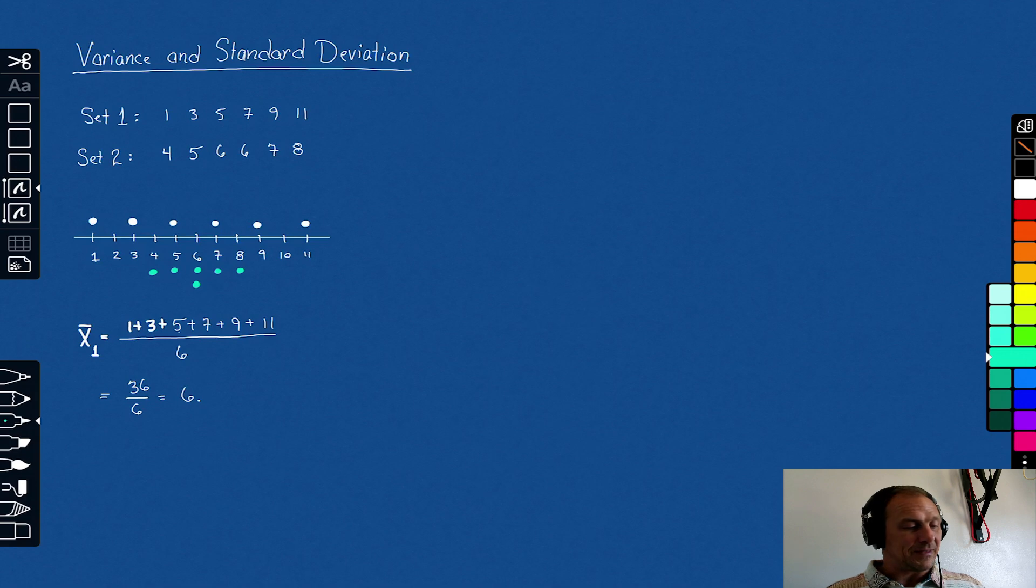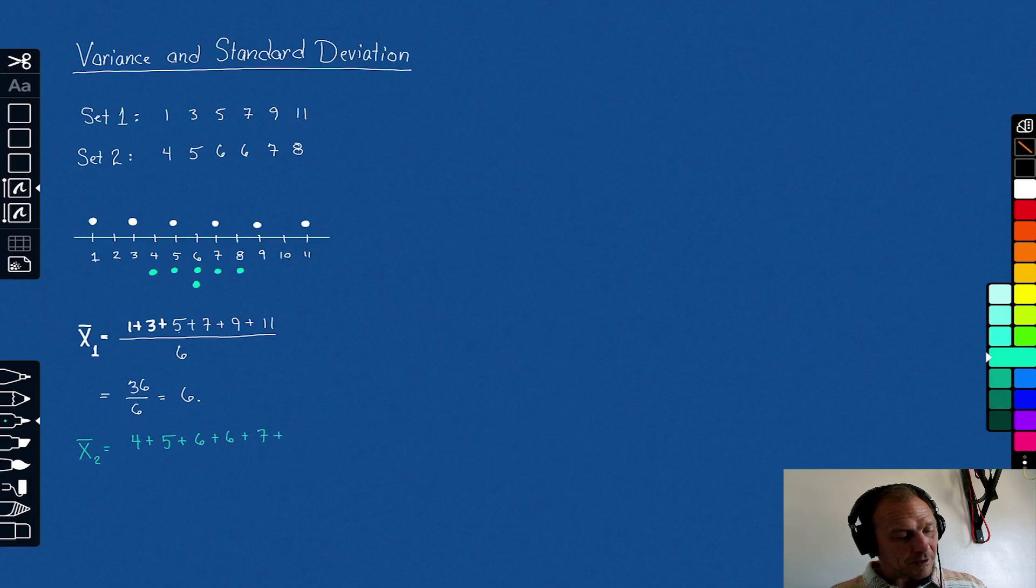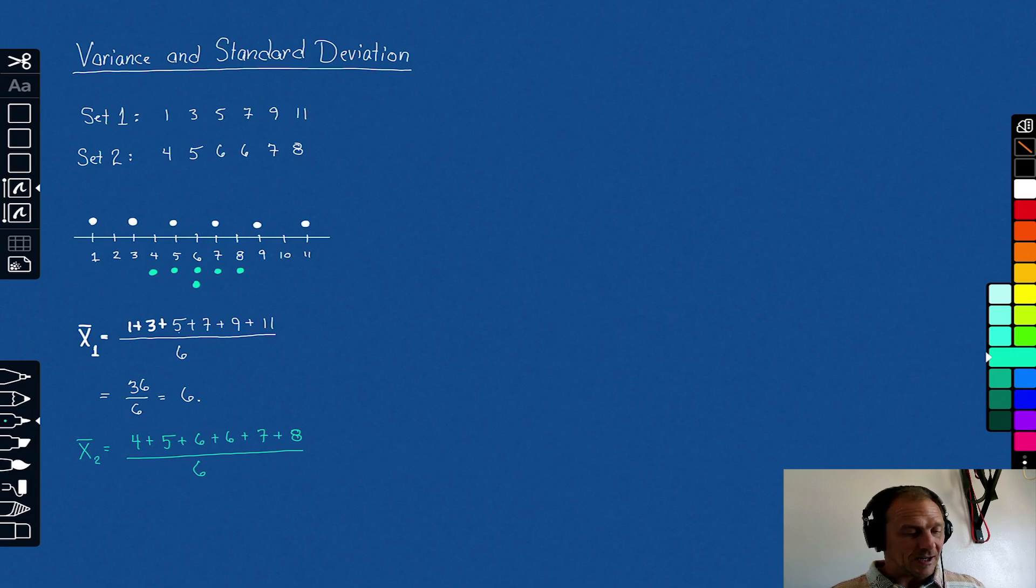Now let's calculate the mean for data set two. This is 4 + 5 + 6 + 6 + 7 + 8, divided by 6. That's 36 over 6. But wait a minute, that's the exact same number that we got above. It's 6.